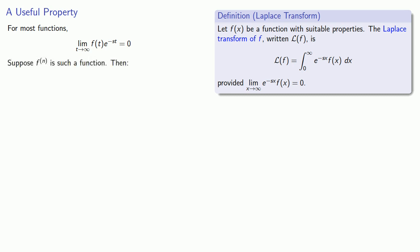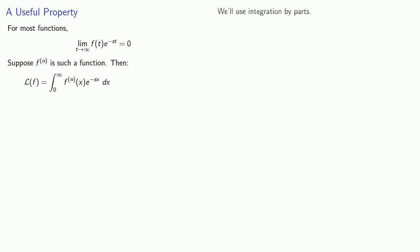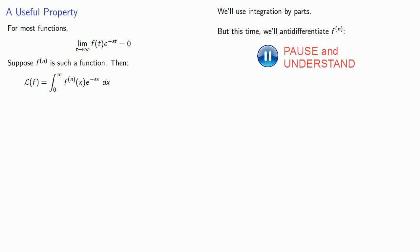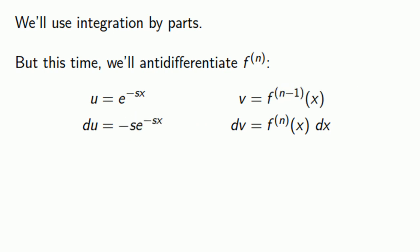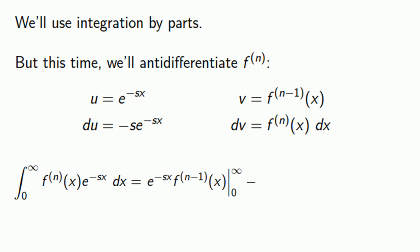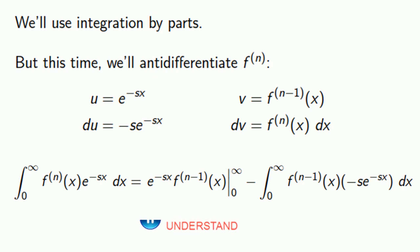Suppose our nth derivative of f is such a function — then we can find the Laplace transform. We'll use integration by parts. Unlike the previous example where we differentiated f until it disappeared, in this case we want to anti-differentiate the nth derivative, because if we anti-differentiate it enough times, we'll get the function. So we'll let u equal e to the power minus sx, and dv equal the nth derivative dx. We find v by anti-differentiation and du by differentiation. Our integral becomes uv minus the integral of v du, and we clean up the algebra — there's no need to carry around a minus minus s.